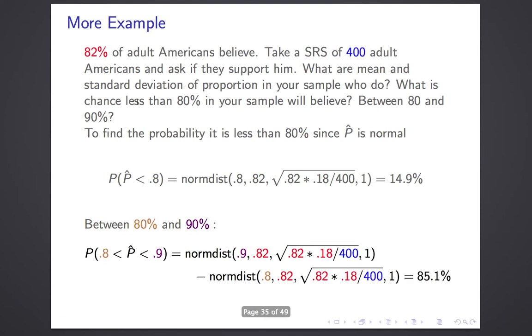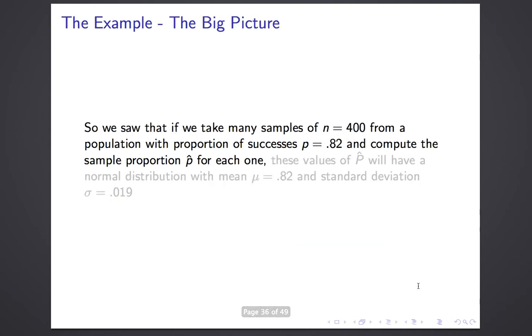Likewise, if I want the probability between 80 and 90%, which is P-hats being between 0.8 and 0.9, I do normdist of the bigger, 0.9, minus normdist of the smaller, 0.8. Everything else stays the same. And that's 85.1%. Notice, a mean of 0.82, a standard deviation of 0.02, between 80 and 90 is from one standard deviation below the mean to four standard deviations above the mean. So you would guess it is all but about a sixth, which is about 85%. That's a reasonable number.